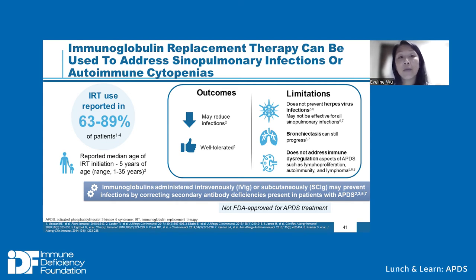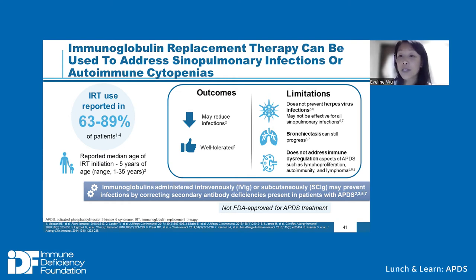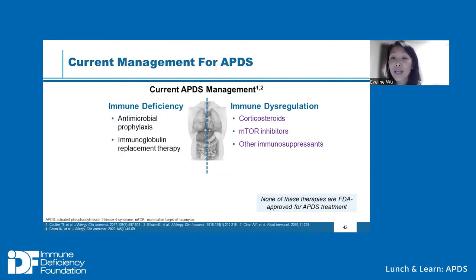The second way to prevent infections is immunoglobulin replacement therapy. A majority of APDS patients report being treated with immunoglobulin replacement therapy, administered either through IV at an infusion center or subcutaneously — infused directly under the skin. This is especially helpful for individuals with low immunoglobulins or poor vaccine responses, helping reduce the frequency of infections, and is overall well tolerated. Limitations include that it doesn't do a great job treating herpes viral infections, doesn't prevent progression of bronchiectasis, and again doesn't address the immune dysregulation.